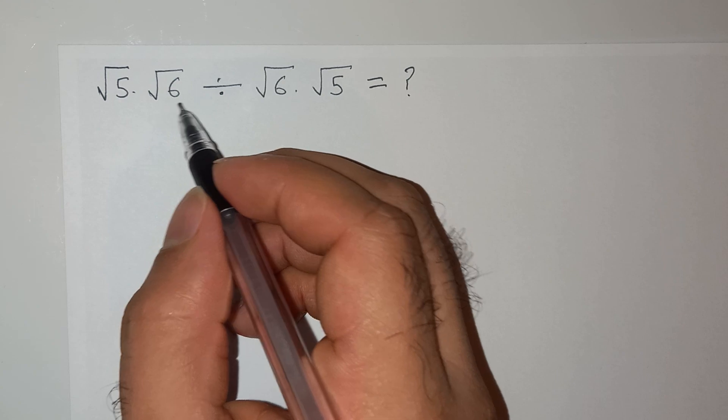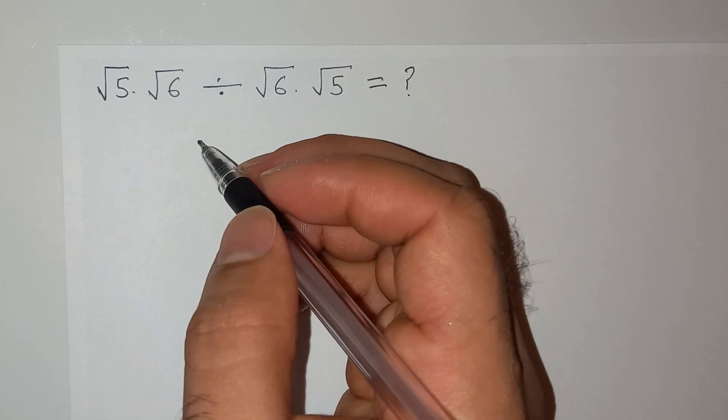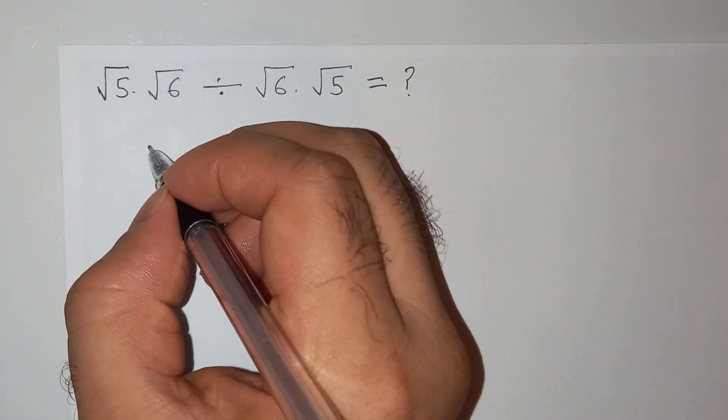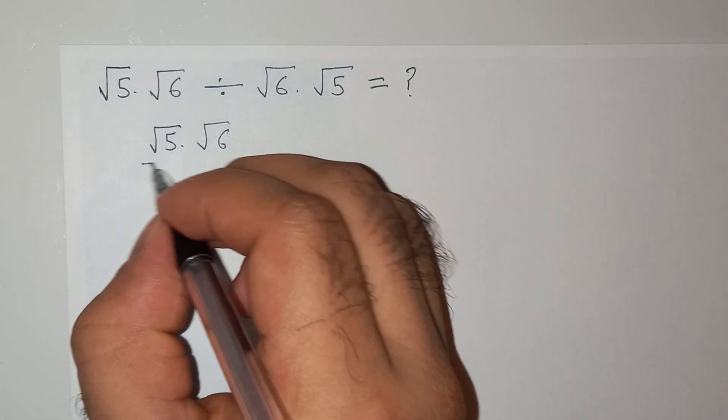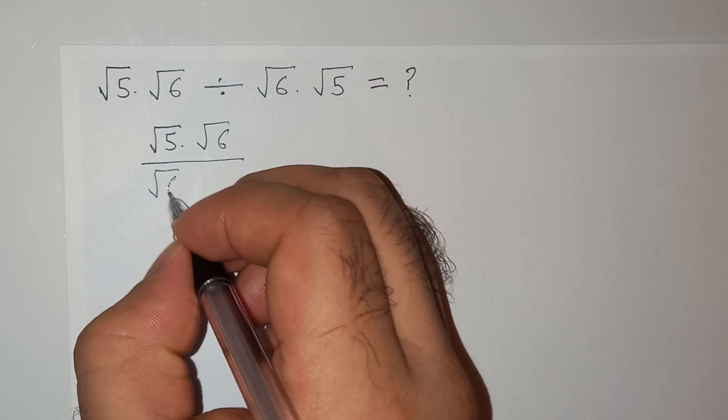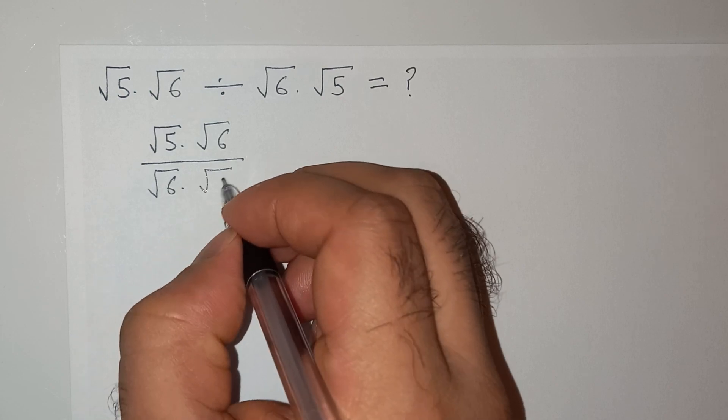From the first look this question looks very easy. You can say that it can be written as √5 multiplied √6 divided by √6 multiplied √5.